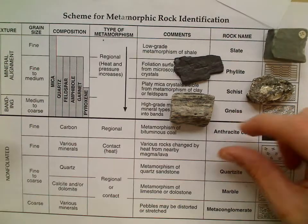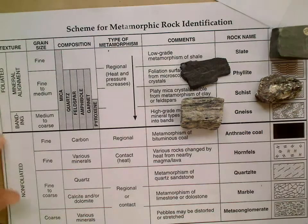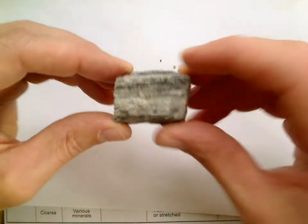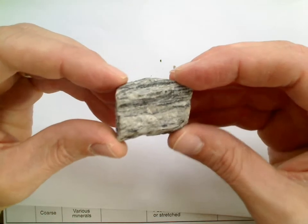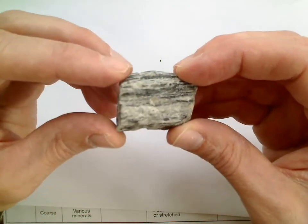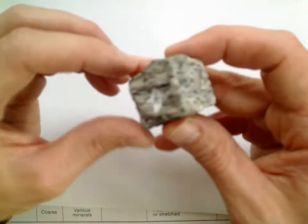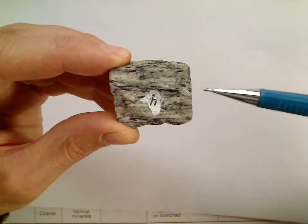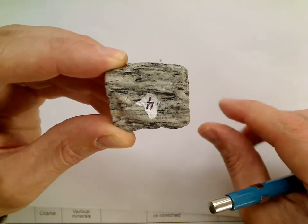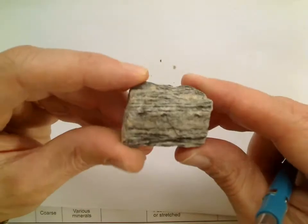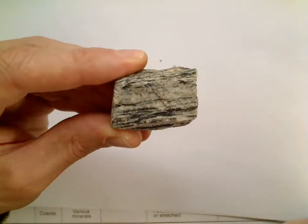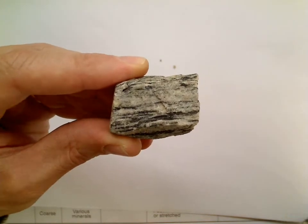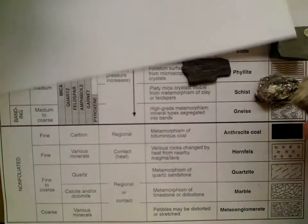When you get down to gneiss, it has what's known as banding — different colored layers where the rock has been so hot it's partially melted, like a thick toothpaste. The minerals within can move around and migrate, and similar minerals kind of join up with others. You can see the striping going across, especially in the black minerals, down toward the bottom. Those layers are called banding.